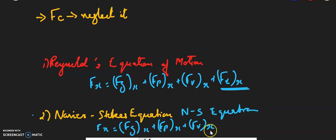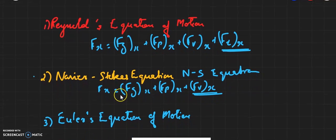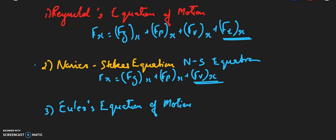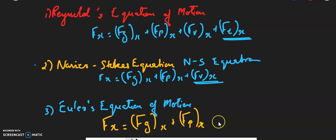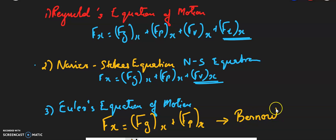If we further remove the viscous force — considering it negligible — the net force becomes: Fx = Fg(x) + Fp(x). This is known as Euler's equation of motion. We are going to focus in detail on Euler's equation, from which we will derive the famous Bernoulli's equation. In the next video, we will derive the Bernoulli's equation.